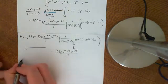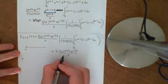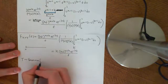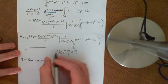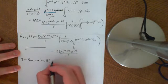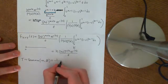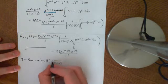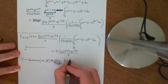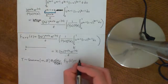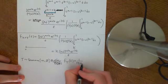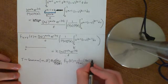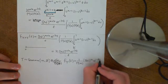Now let me recall what the PDF for a general gamma distribution on the positive real numbers is. If t is distributed Gamma(α, β) — using α and β rather than a and λ, which we've already used in this problem — then the PDF as a function of little t is going to be 1 over Γ(α), times (βt) to the power of α, times e to the negative βt, divided by t. Of course it is 0 on the non-positive real numbers.